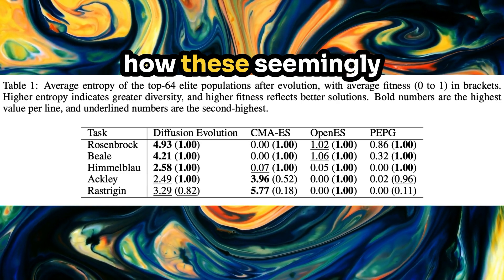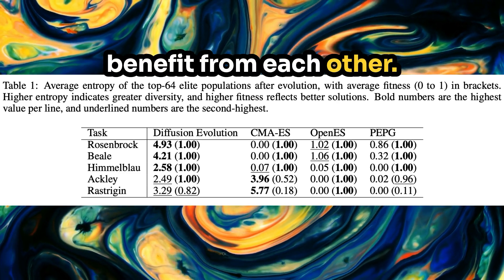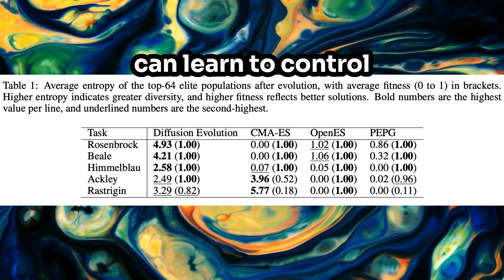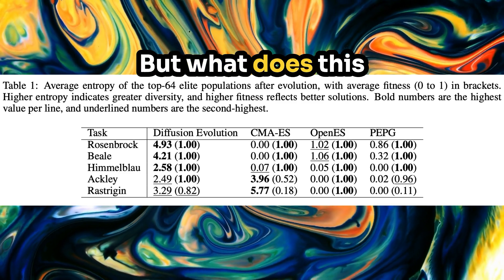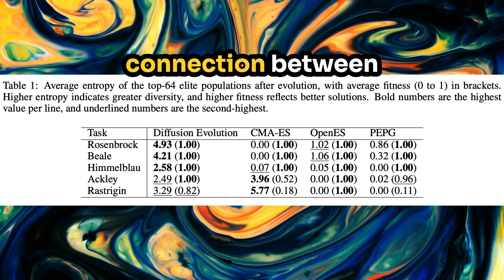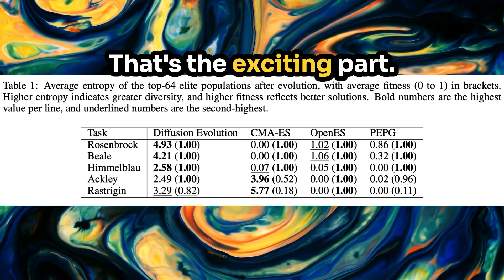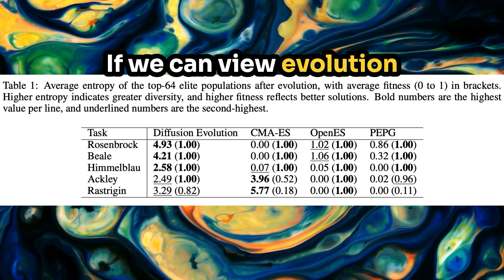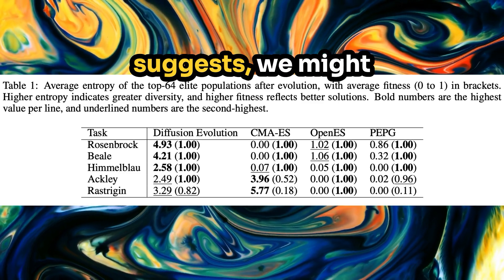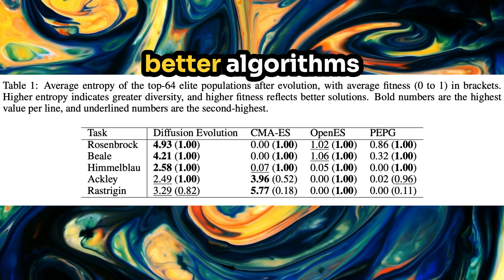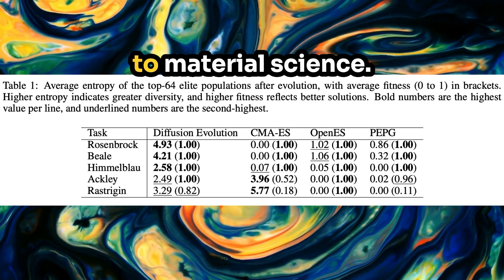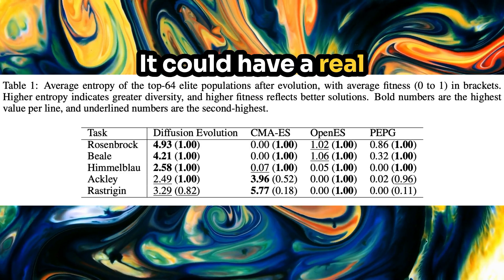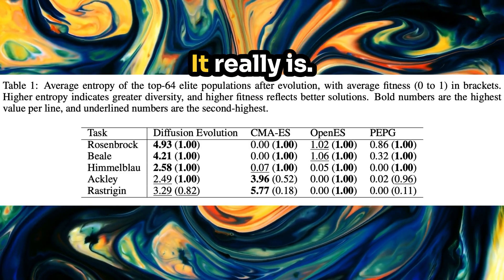It really highlights how these seemingly different areas of AI can benefit from each other. We started with AI generating cool pictures of cats, and now we're talking about algorithms that can learn to control complex systems. But what are the bigger implications of this connection between diffusion models and evolution? It could change the way we solve problems in areas far beyond AI — if we can view evolution as a kind of diffusion process, we might be able to use similar techniques to design better algorithms for everything from drug discovery to material science.